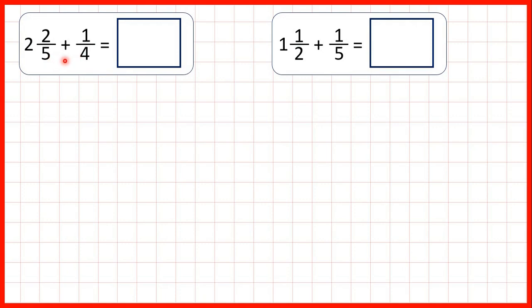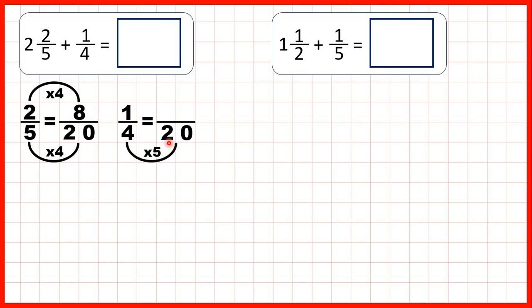Now the lowest common multiple of 5 and 4 is 20, so we can find equivalent fractions to 2 fifths and 1 quarter which have a denominator of 20. 5 times 4 is 20, 2 times 4 is 8, 4 times 5 is 20, and 1 times 5 is 5.